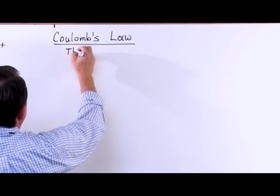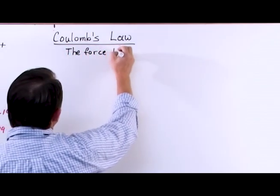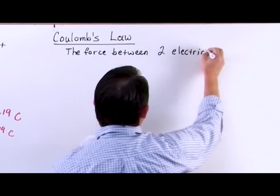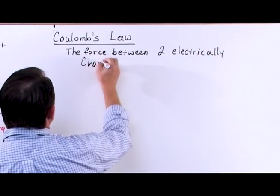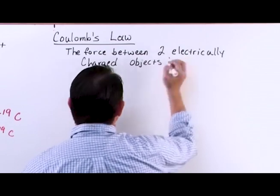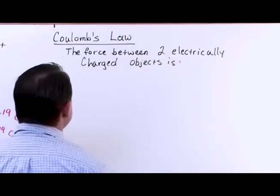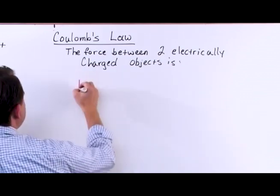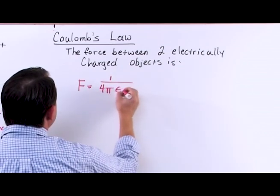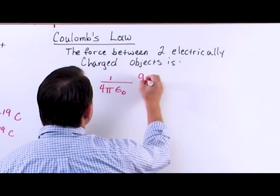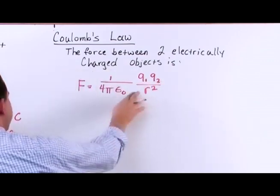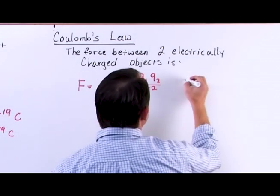The force between two electrically charged objects is the following. It's really not a very complicated equation. The force between these two objects is equal to one over four pi epsilon naught — we'll talk about that in a second — times charge number one times charge number two, divided by R squared. R is the distance between them. This is Coulomb's Law.